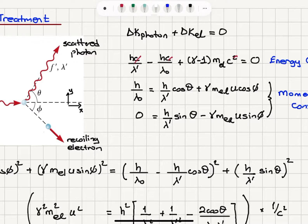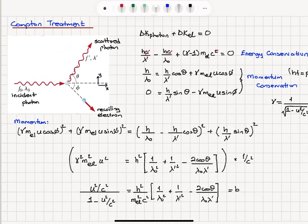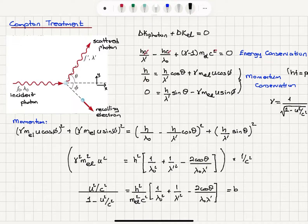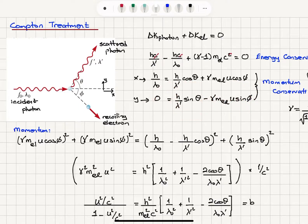Electrons gain kinetic energy (gamma minus 1)mc squared and momentum gamma mu. Taking the momentum equations for x and y components: gamma mu cosine phi equals h over lambda zero minus h over lambda prime cosine theta. Squaring this gives gamma squared m squared u squared cosine squared phi. Isolating the y-component: gamma m u sine phi equals h over lambda prime sine theta. Squaring gives gamma squared m squared u squared sine squared phi equals (h over lambda prime sine theta) squared.